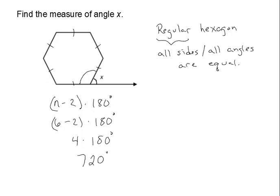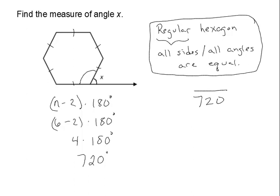Now, since we know that all of the angles are equal, that's what a regular figure is. What I can do now is say, if the sum of all six angles is 720 degrees, and they are all equal, I can divide that by 6 to figure out the measure of one of the interior angles.